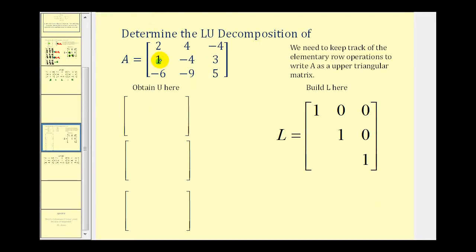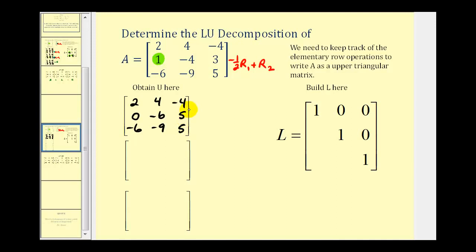Let's take a look at a second example. Let's start by obtaining a zero in the row two, column one position. We're going to replace row two with negative one half times row one plus row two. The first row stays the same. For the second row: negative one half times two is negative one plus one, that's zero; negative one half times four is negative two plus negative four, that's negative six; negative one half times negative four is positive two plus three, that's five. The third row stays the same. Our multiplier is negative one half, so we place positive one half in row two, column one of our lower triangular matrix.